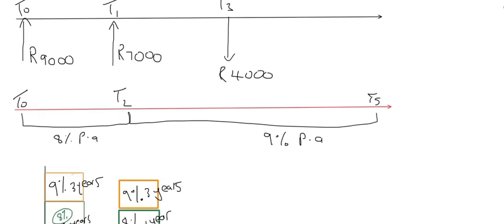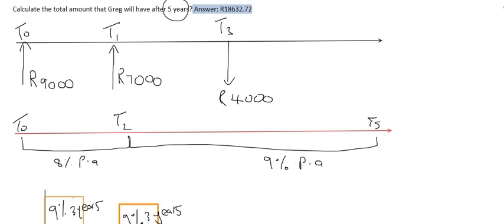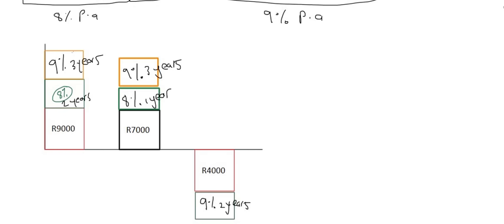The last bar we need in our bar graph is the 4,000 rand withdrawal. The 4,000 rand gets taken out at year three, so how many years will that 4,000 rand not be in the account? Just for the next two years. And what interest rate does the account have at that point? It's 9%, because after two years the bank changes its interest rate to 9% right until the end. So that 4,000 rand will not be in the account for two more years, and the interest it would have earned if it was there would have been 9%.